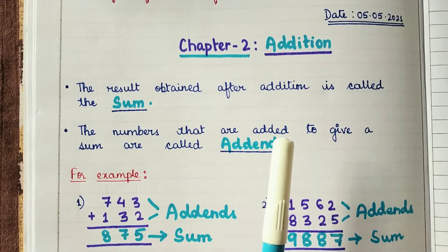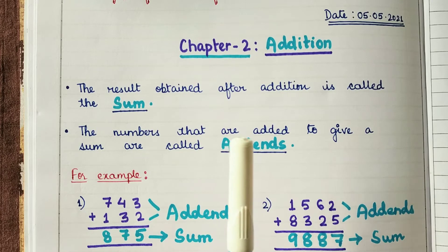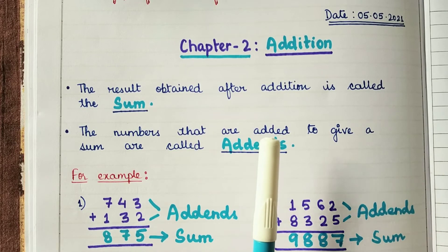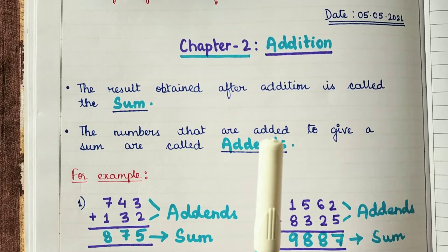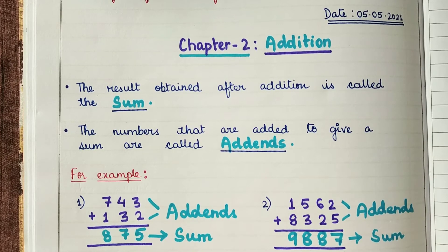Next term: addend or addends. The numbers that are added to give a sum are called addends. The numbers which are added to give a particular sum are called addends.